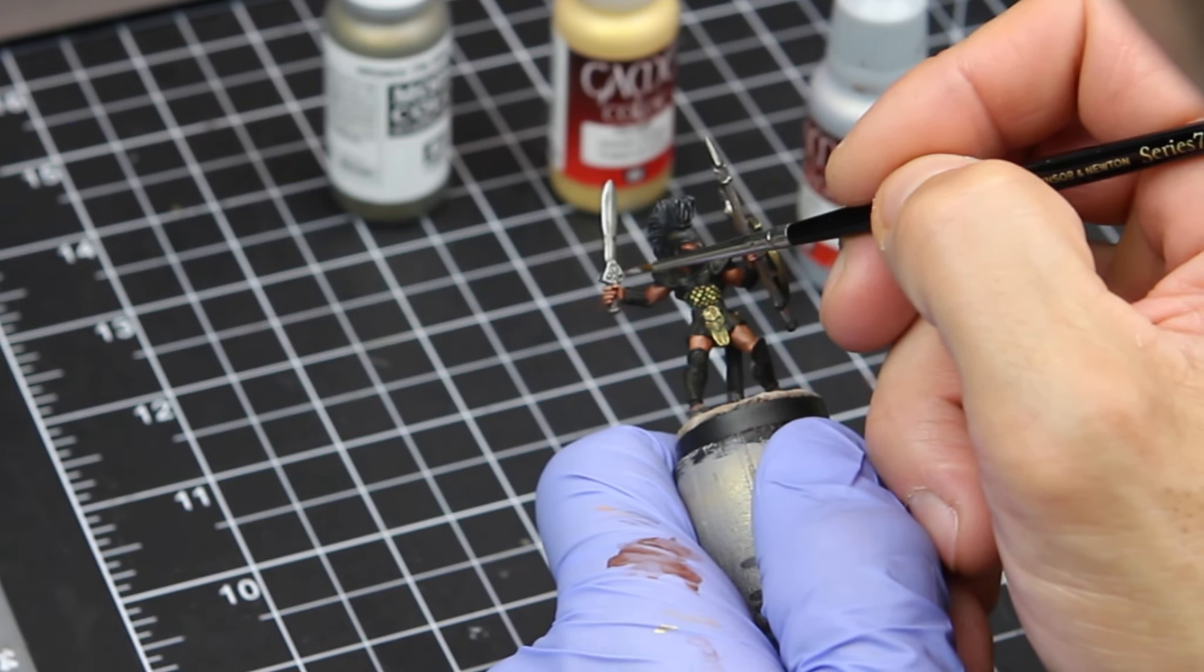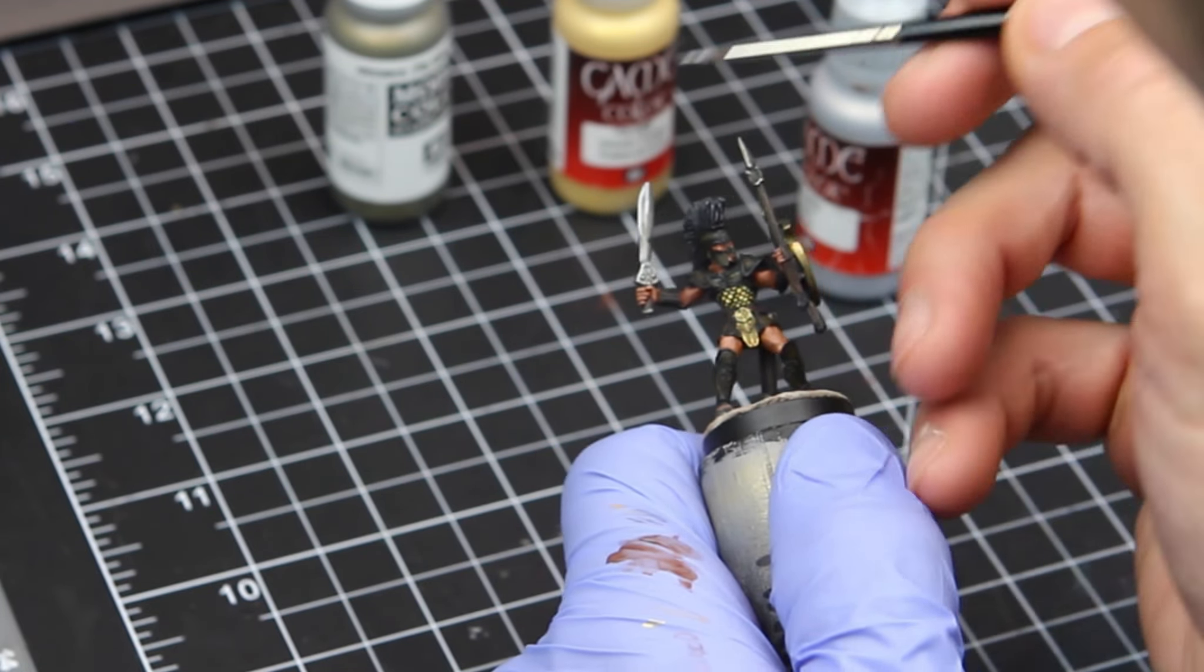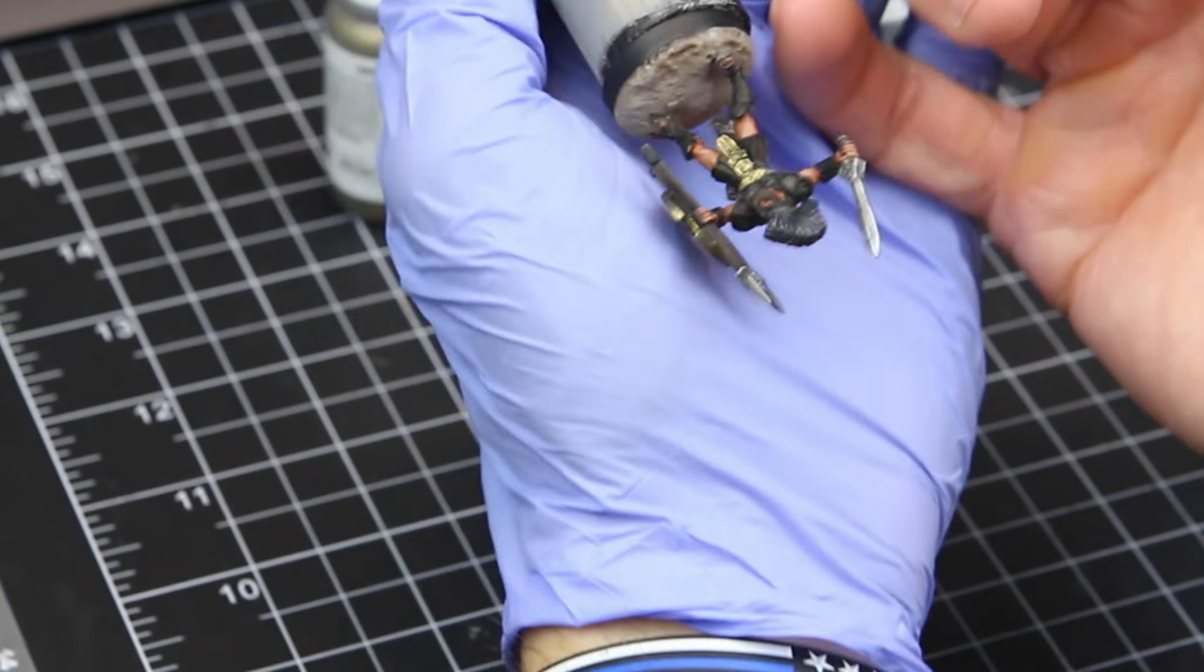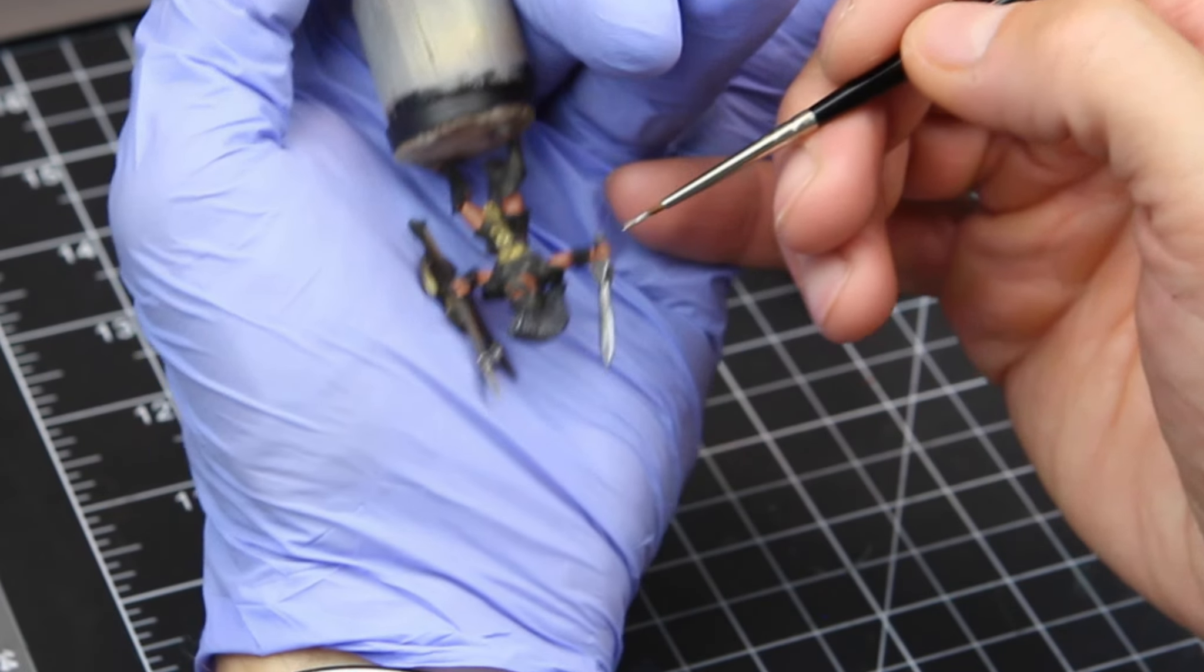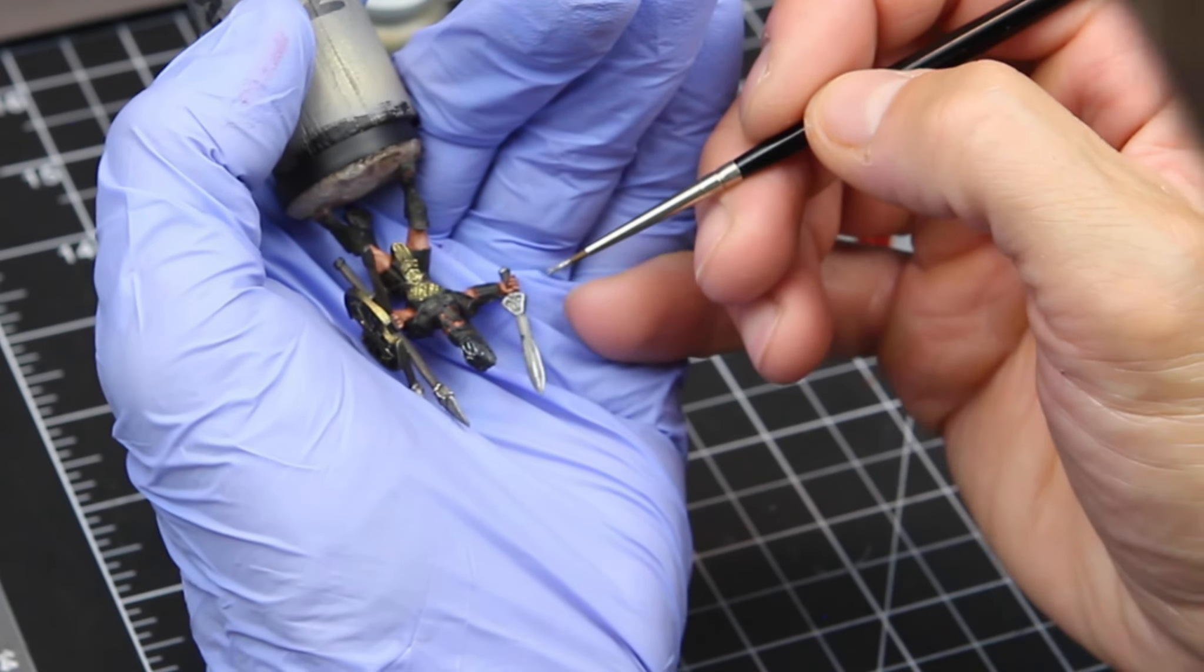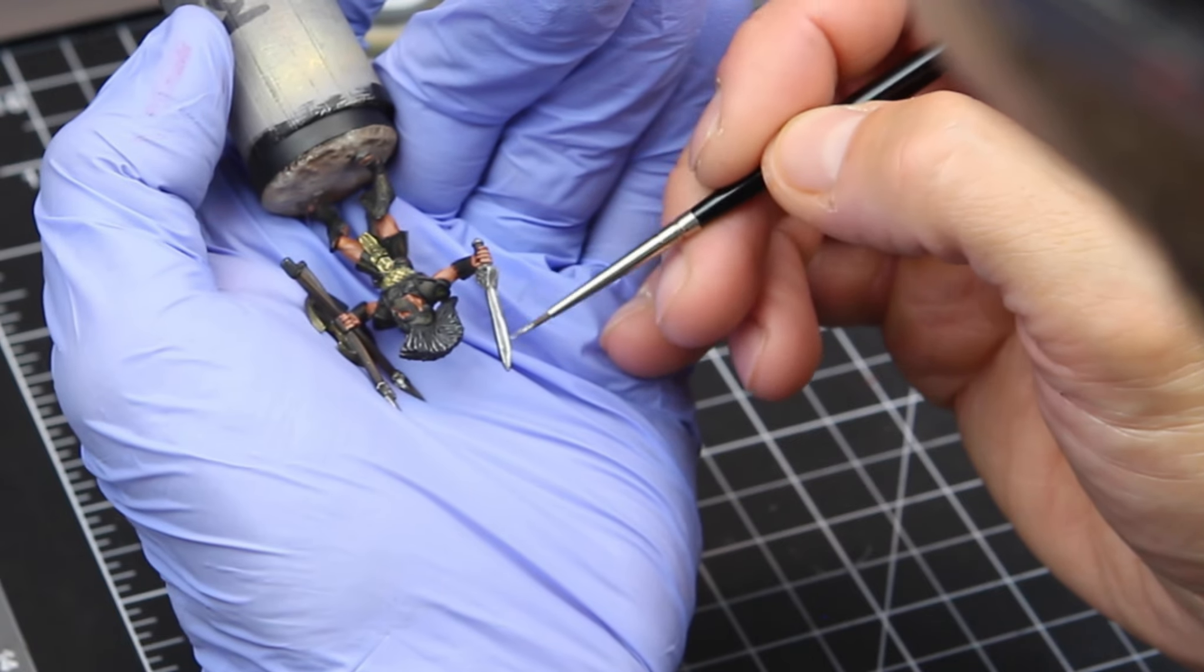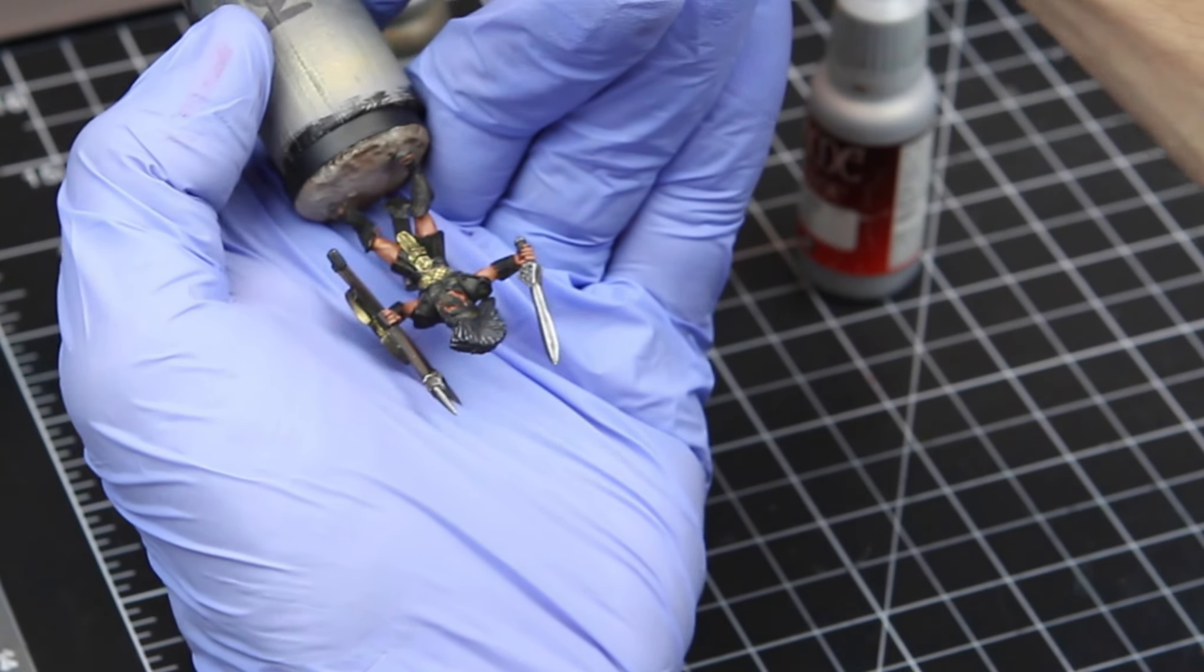And all I'm doing is taking a straight up silver to do the highlight. I'm using the edge of the brush to get the ridgeline here on the sword, as well as the edges. And once all of the metallic pieces on this miniature are highlighted, you know, they're really all going to stand out. It's going to look really good once we're done.